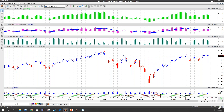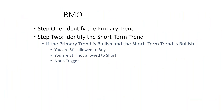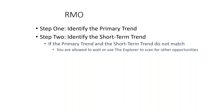If we're bullish long-term and bullish short-term, we're allowed to buy — we're still not allowed to short, and it's not a trigger. But importantly, if your long-term trend is bullish and your short-term trend is bearish — if they don't match — you wait. We don't want to trade. We want to identify strong trends and trade in the direction of strength. You can also use the MetaStock scanner to scan for these matching setups.